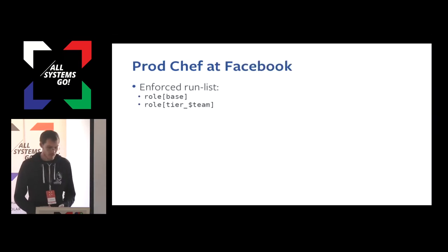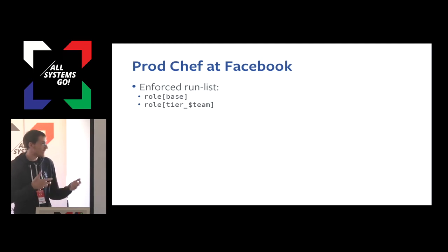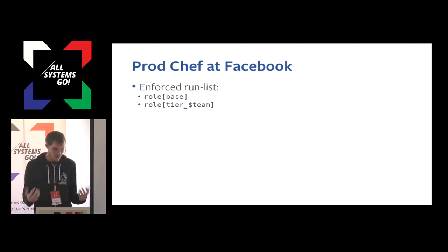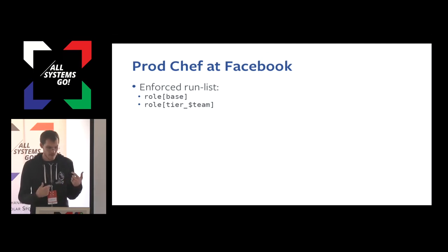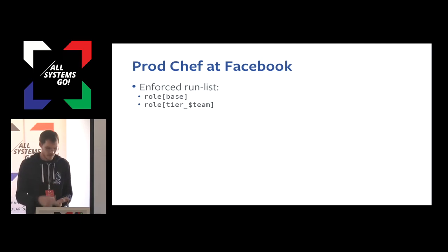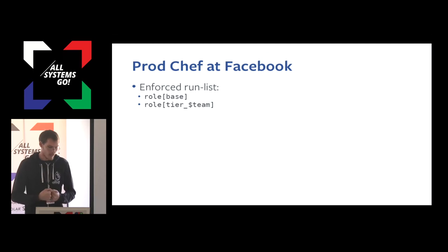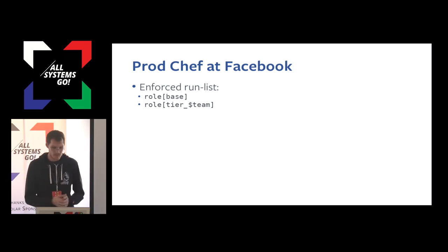The way ProdChef works at Facebook, we have a pretty mature ProdChef setup based around a dual run list. For every machine at Facebook, we have a pretty homogeneous environment — they all run CentOS 7, as my teammate Davida mentioned. We allow teams to customize how their Chef run works. We have a run list split into two halves: the base role that does all the base operating system stuff and sets up SystemD, Chef itself, Cron, Yum, and other things the operating system needs. Then teams can provide their own Chef code via a tier role that runs whatever they want — this could be something that sets up HHVM, which is our web server, or MySQL, or whatever.